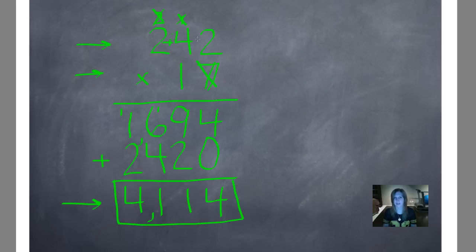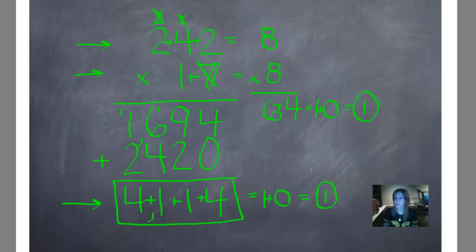2 plus 4 is 6, plus 2 is 8. It's already a single digit. 1 plus 7 is 8. Another single digit. 8 times 8 is 64. Whoops, we can't have 2 digits. 6 plus 4 is 10. 2 digits again. 1 plus 0 is 1. So 1 is our magic number. Now we'll add up our final product. 4 plus 1 is 5, plus 1 is 6, plus 4 is 10. 1 plus 0 is 1. 1 is our magic number. And draw our power bar to prove it.